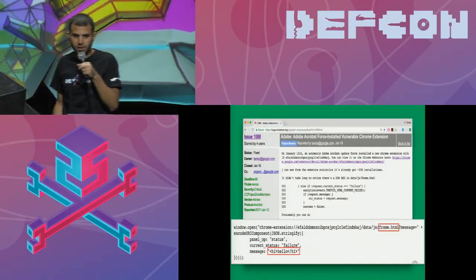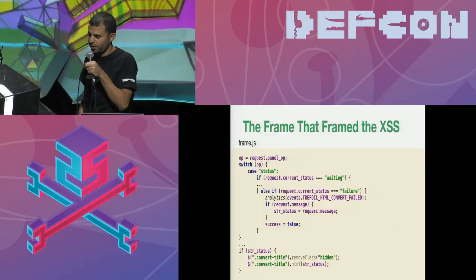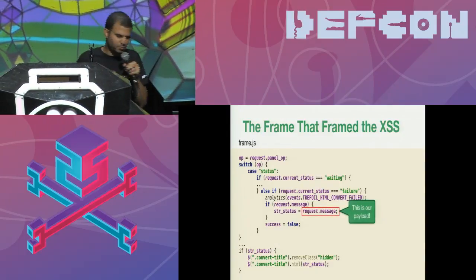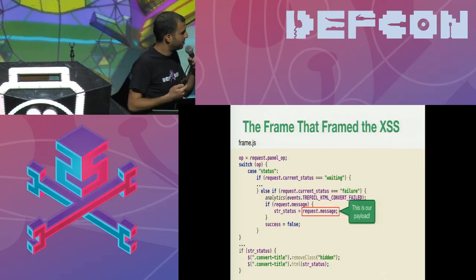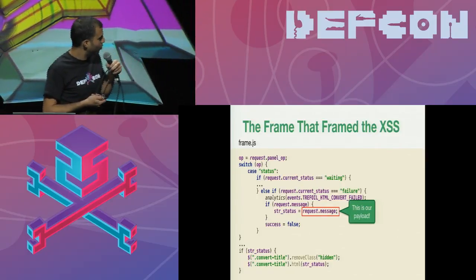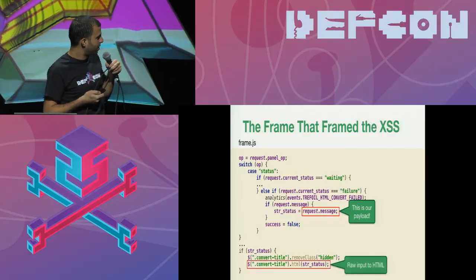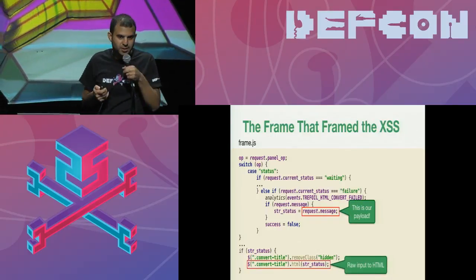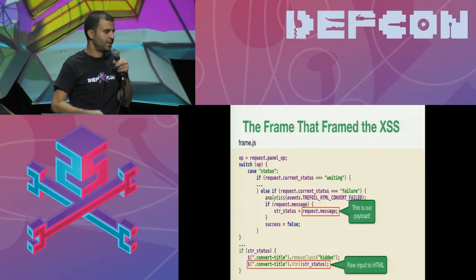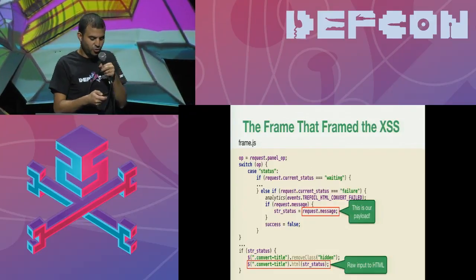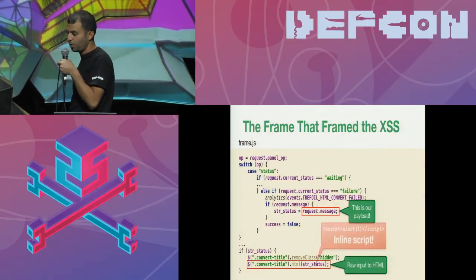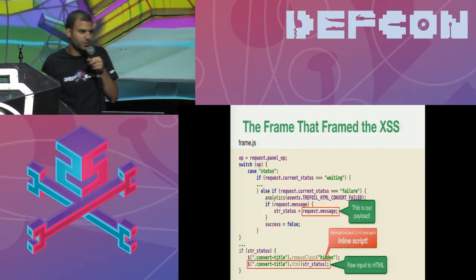In the researcher's report you can see the POC of the exploitation code. There is a page called frame.html that, if you send it a payload in a parameter, it will execute it. It's a pretty straightforward XSS — the payload goes into request.message, then into str_status, and from there as innerHTML to the title of the page. The problem is it's so easy that CSP (Content Security Policy) blocks it because it's an inline script.